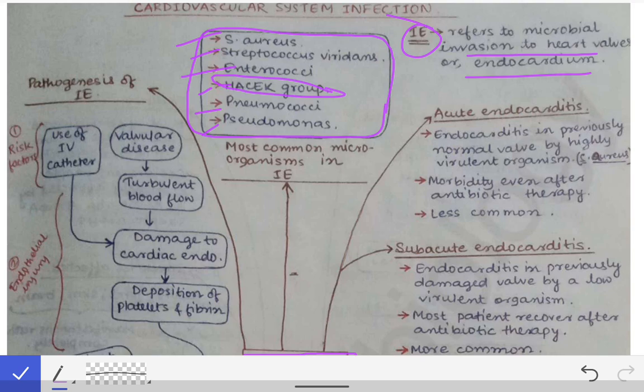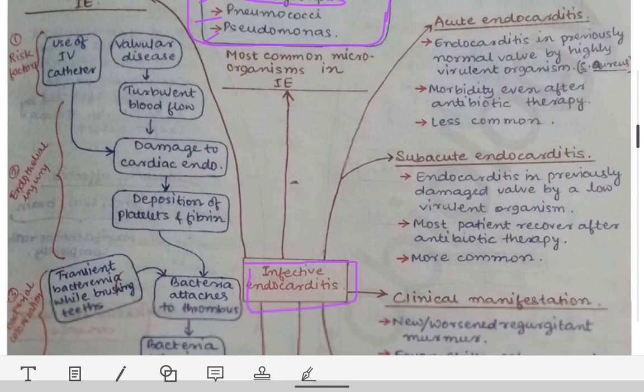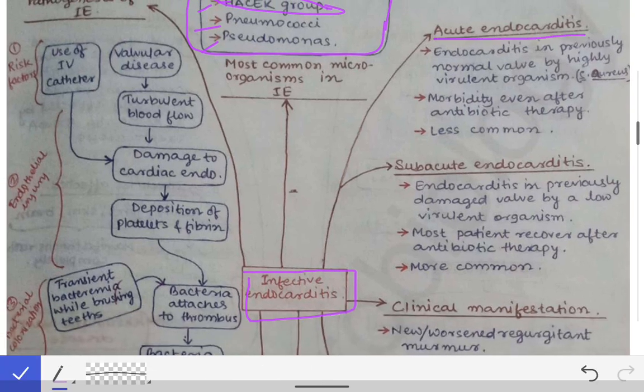Infective endocarditis is of two types: acute endocarditis and subacute endocarditis. Acute endocarditis occurs in a previously normal valve caused by a highly virulent organism like Staph aureus. A previously normal valve requires a highly virulent organism to invade it, whereas an already damaged structure can be invaded easily by a less virulent organism.